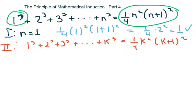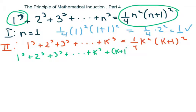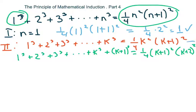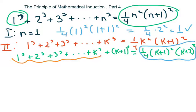We're going to check for the next term. Since the next term from k is k plus one, copy everything down again: one cubed plus two cubed plus three cubed plus dot dot dot plus k cubed plus (k plus one) cubed. On the right side this will be one-fourth times (k plus one) squared times (k plus two) squared — that's what we want it to look like when done.